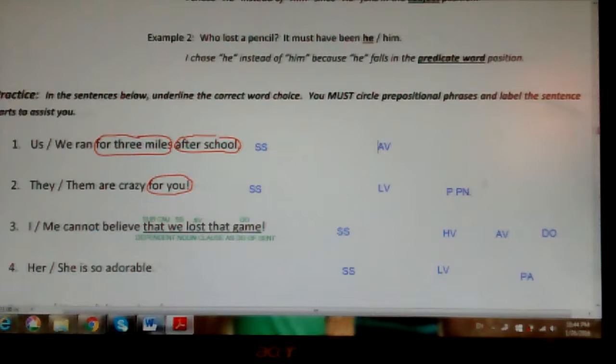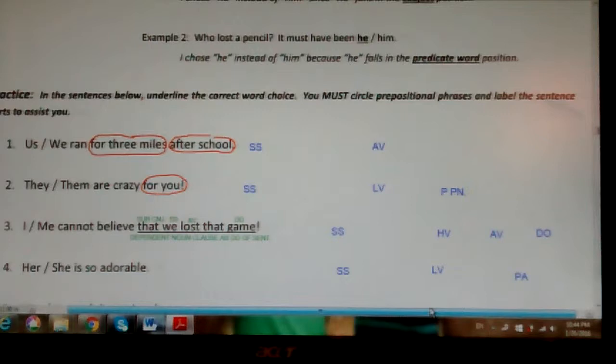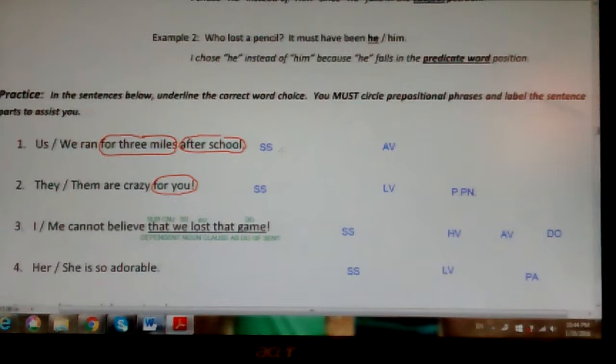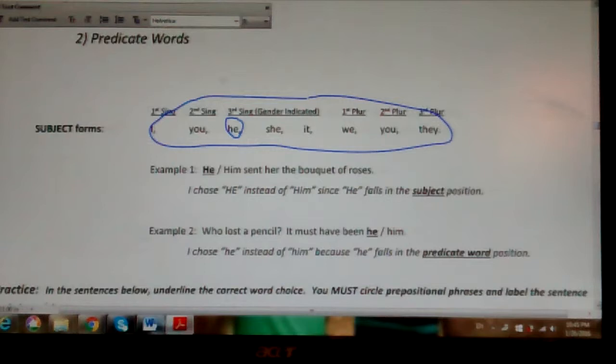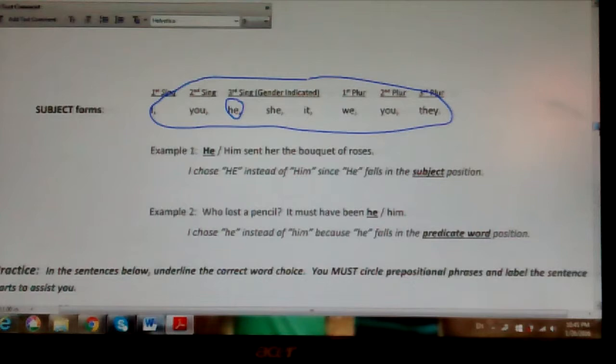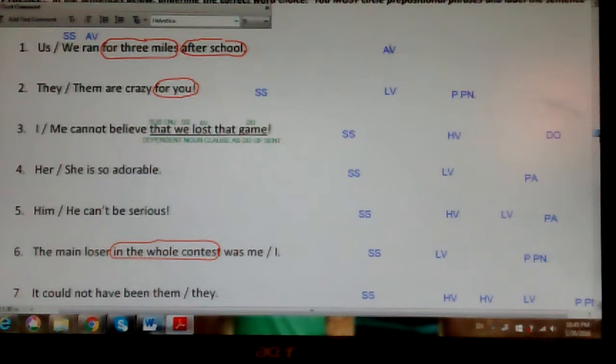Here we go, practice. In the sentence below, underline the correct word choice. You must circle prepositional phrases and label the sentence parts to assist you. So as I look at this number one, us or we ran for three miles after school. I circle the prepositional phrases, and as I see this I'm looking for a main verb, and I have a main action verb ran. Who or what is this about? It's about we, the simple subject. And if I keep coming up here I can see that my subject forms are shown. I'd have to choose we instead of us. Us would be that object form in this situation.